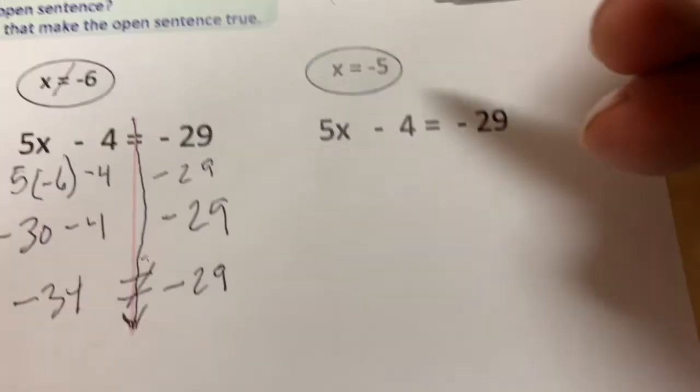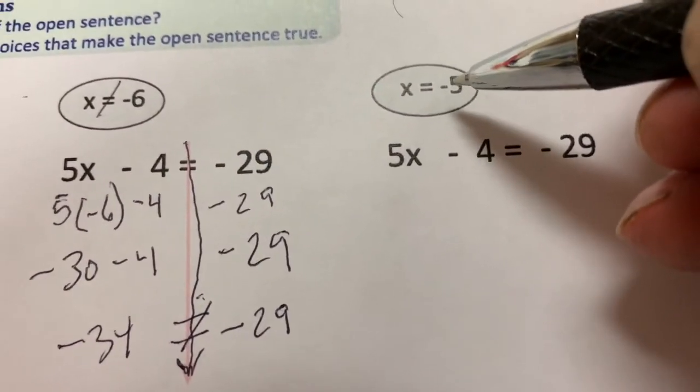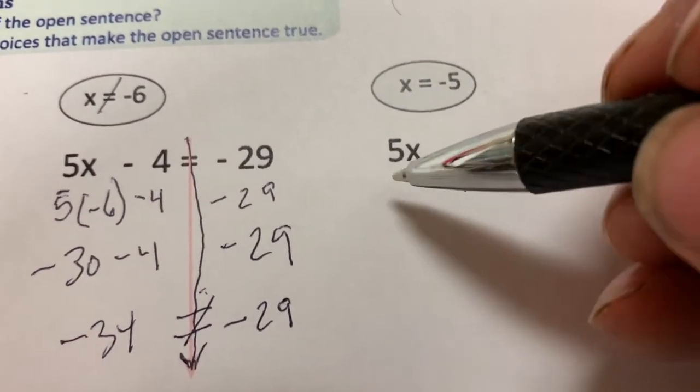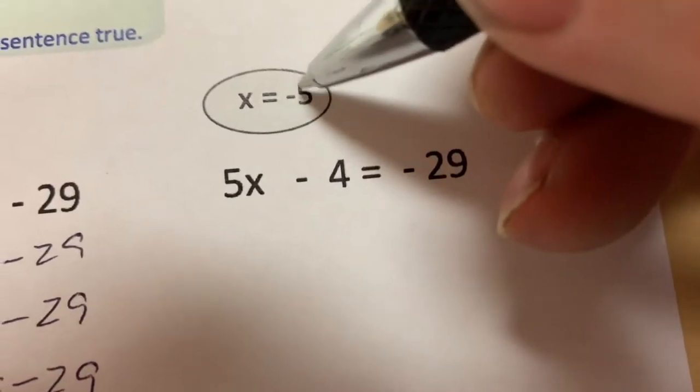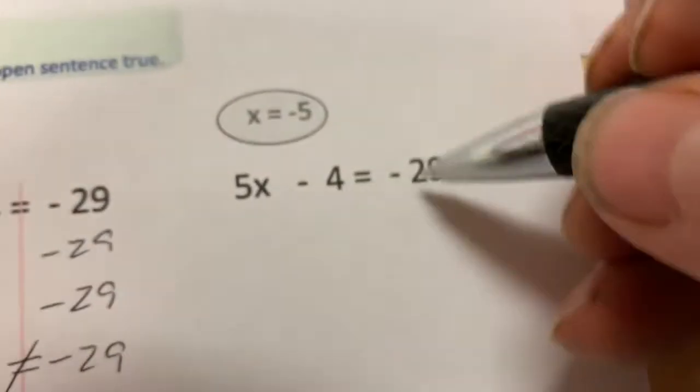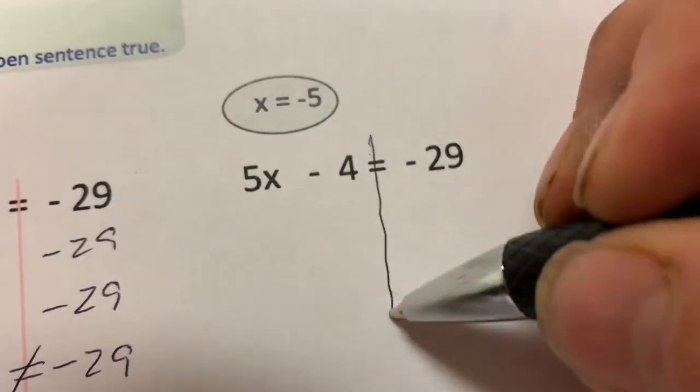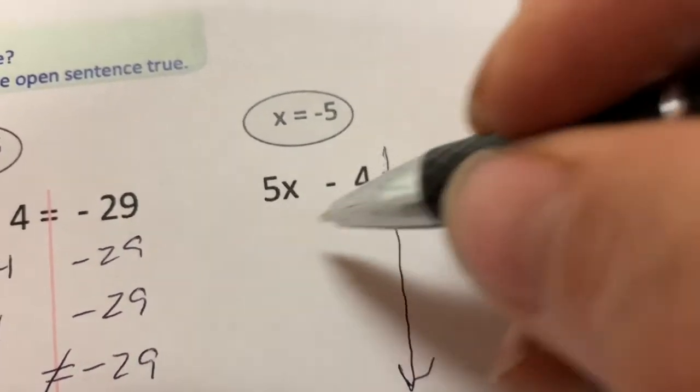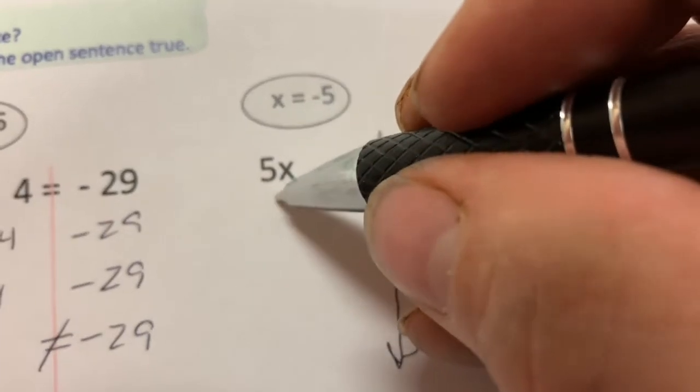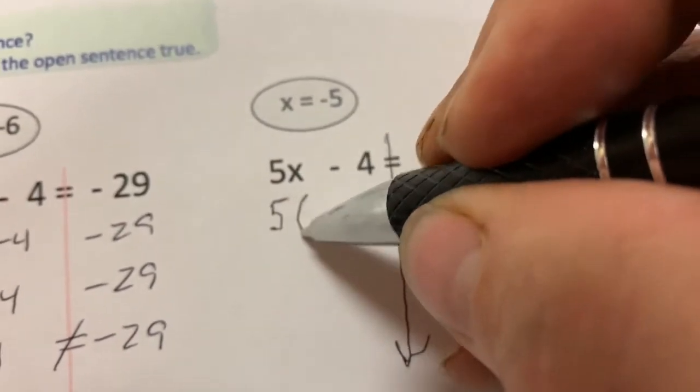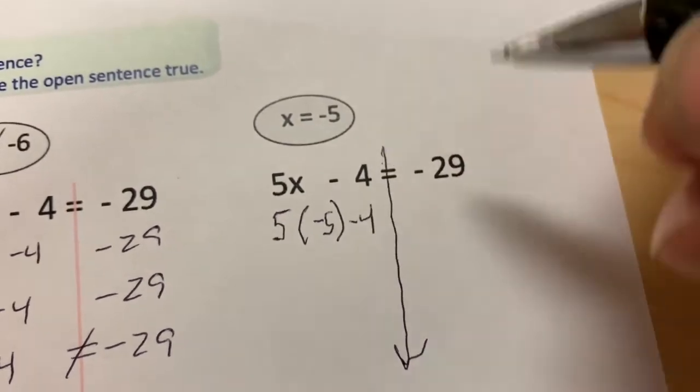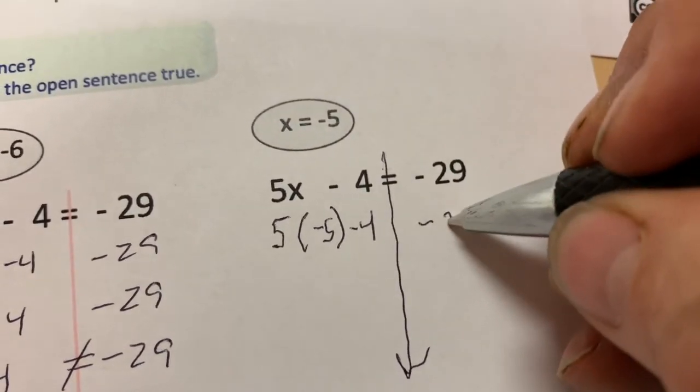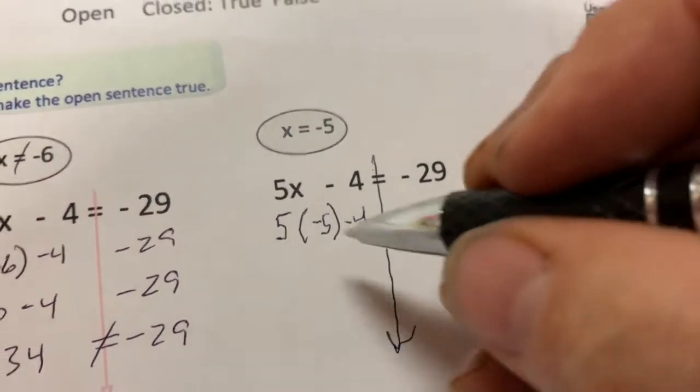So, let's try another solution for this open sentence. It's 5X minus 4 equals negative 29. And it suggests we try negative 5. So, let's put the mirror line in. Remember, we're not going to put in equals for these other statements because we don't know if they're true. But we can substitute in that negative 5. And over here, let's see if it's the same as 29. I don't know yet. So, I'm not writing equals.